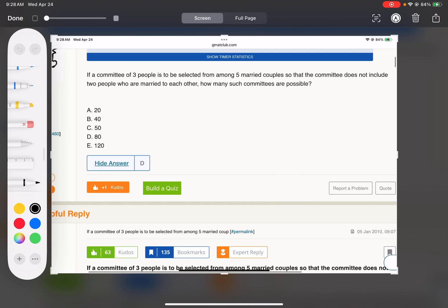So this is a classic combinatorics problem. We're going to choose three people from among five married couples, so ten total people, so the committee does not include two people who are married.